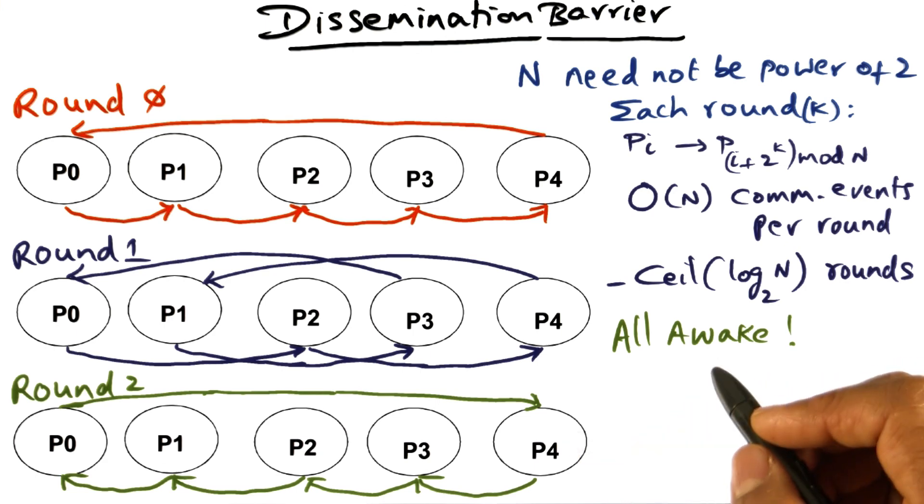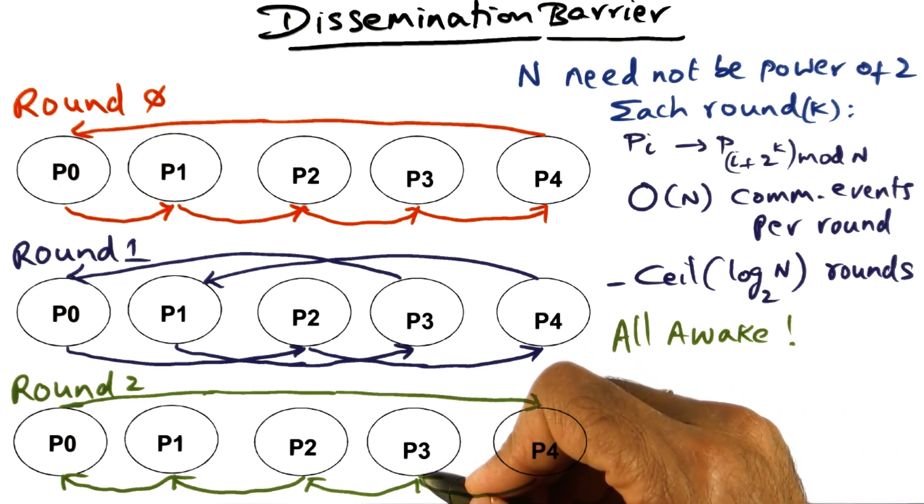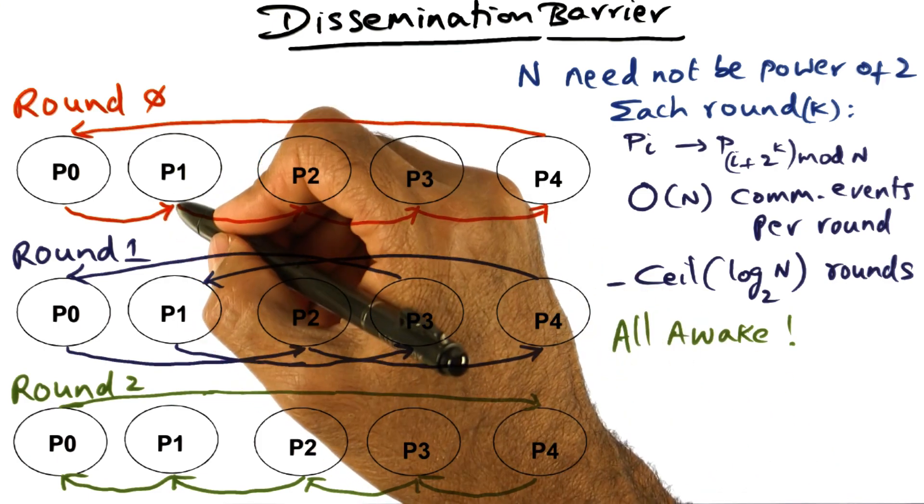I've been using the word message in describing this dissemination barrier. It is convenient to use that word because it is information diffusion. But if you think about a shared memory machine, a message is basically a spin location.